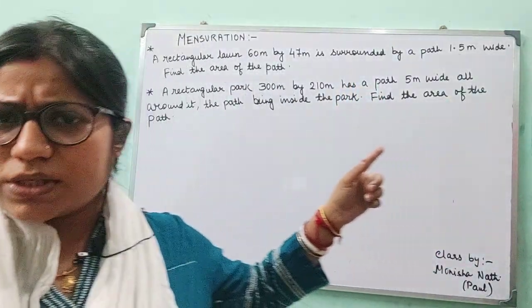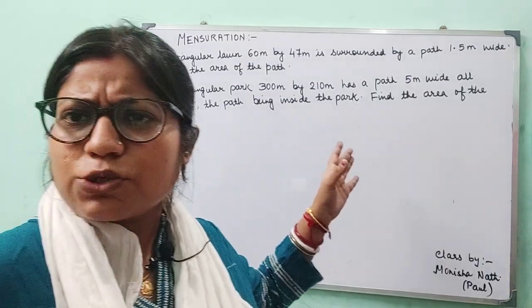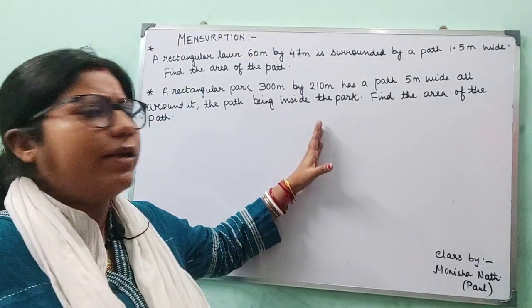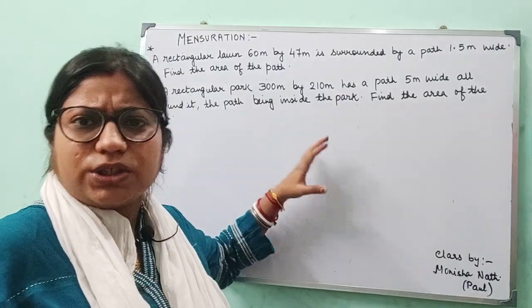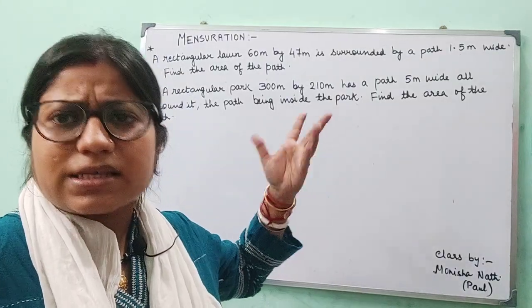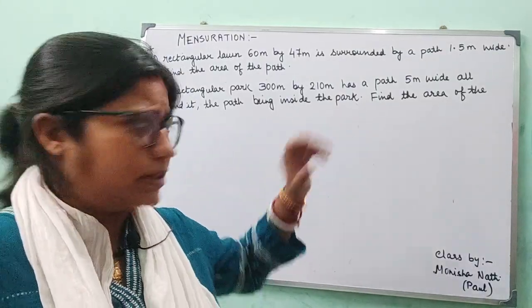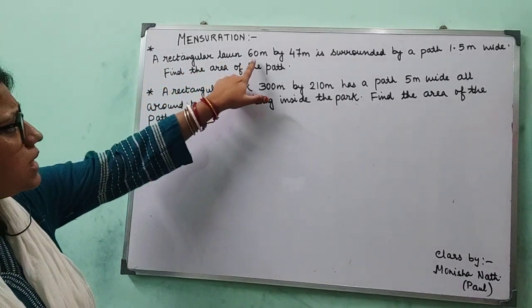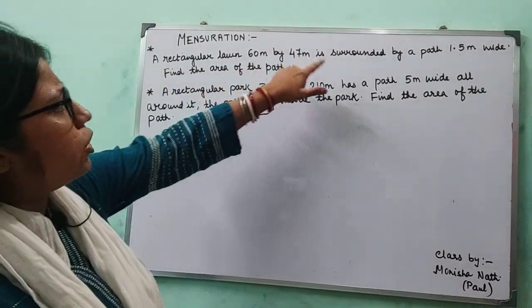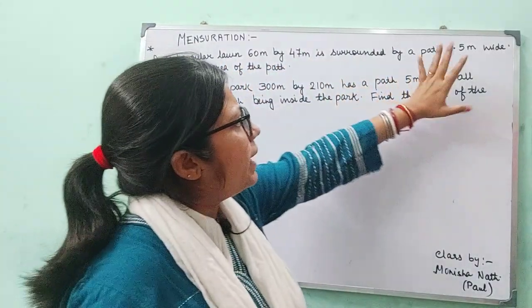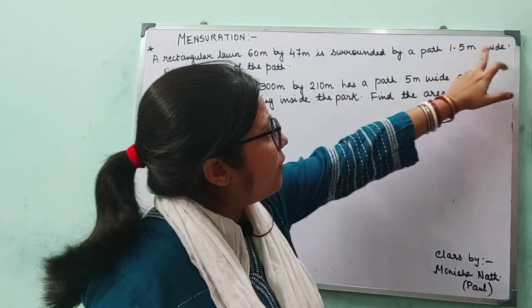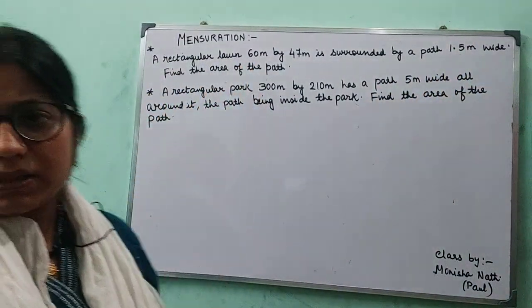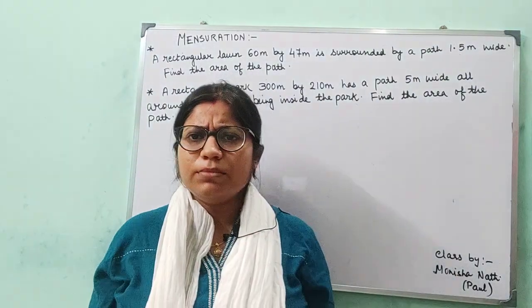Let us discuss these two sums, because these are very common sums which we usually deal with while dealing with the problems of mensuration based on the rectangle topic. So the first problem is: a rectangular lawn 60 meter by 47 meter is surrounded by a path which is 1.5 meter wide. Find the area of the path. Very common problem.